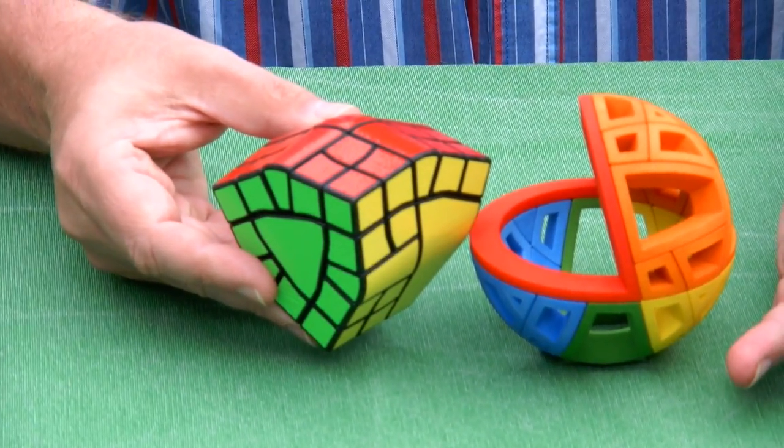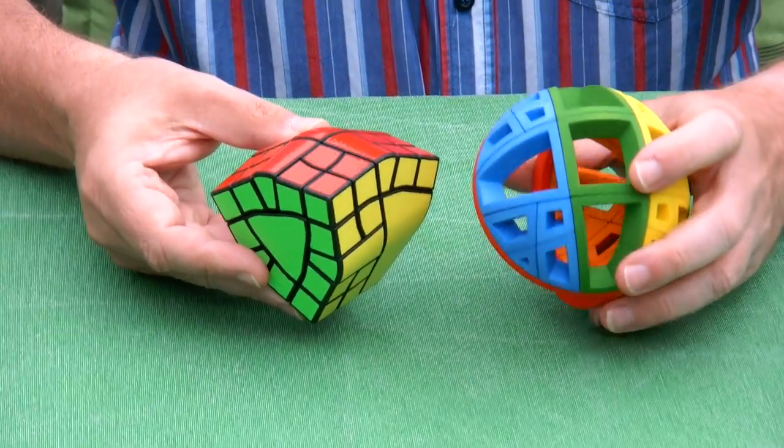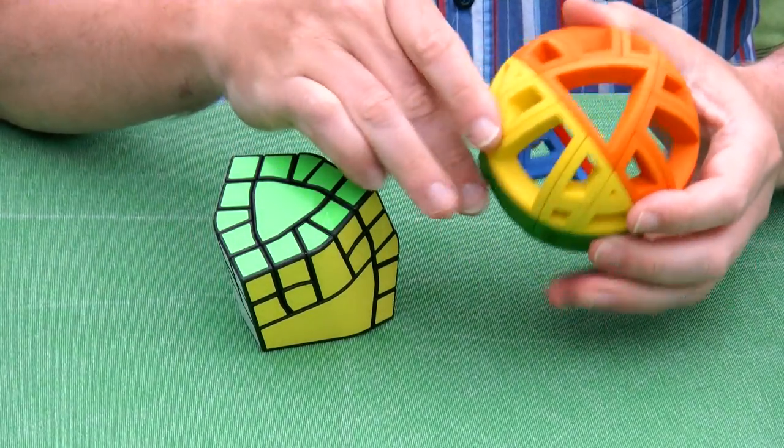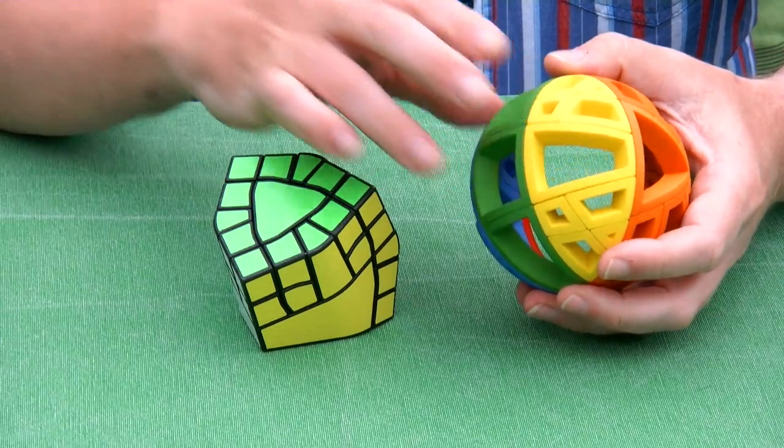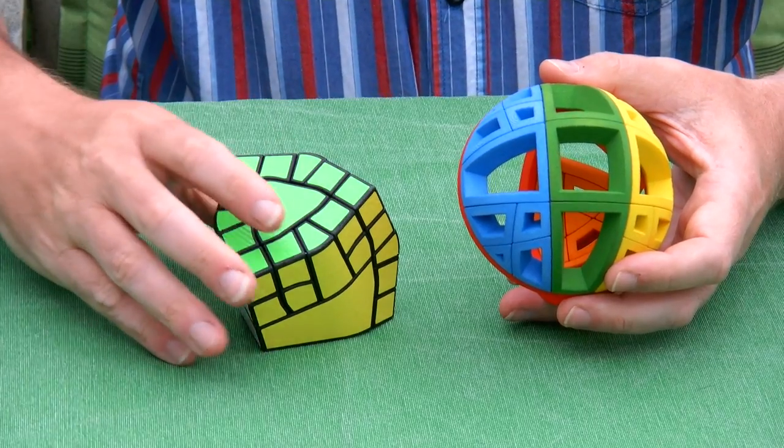And as you know from previous videos of mine, I'm a big fan of the Bram sphere geometry, which has a fourfold symmetry and a threefold symmetry. And I made this spherical version to show the geometry without any distraction.